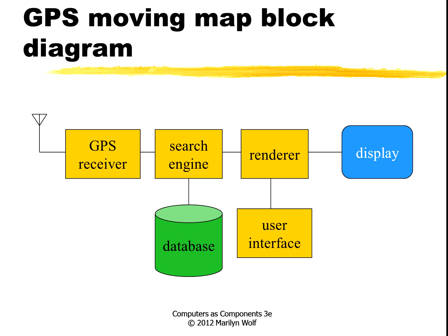Here's a simple description of the system in block diagram form. We have a GPS receiver and a display at the other end. A database holds all the map information, and a search engine takes position information from GPS, searches through the database, and figures out what needs to go on the screen. A rendering device then actually draws the map and all the information on the screen. There's also a user interface that may need to draw things on the screen — button requests, responses to buttons, and so forth.